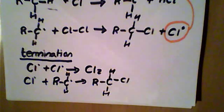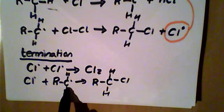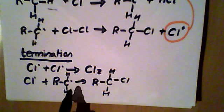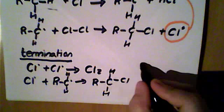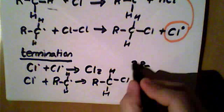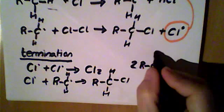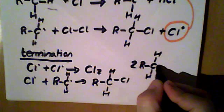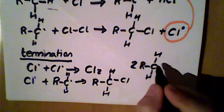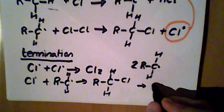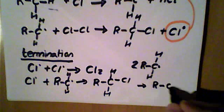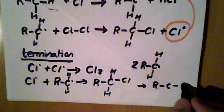And the final scenario is we could get two alkyl radicals colliding together. So if we have two alkyl radicals colliding together we actually double the carbon chain length. So we would end up with an alkane with twice the number of carbons.